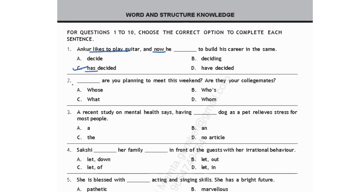The second question: Dash, are you planning to meet this weekend? Are they your college mates? Here you need a pronoun to complete this sentence. 'Whose' cannot be used as it shows possession. 'Who is' will not fit this blank. 'What' is used to indicate things, but here we are talking about people. So 'whom are you planning to meet this weekend? Are they your college mates?' Option D is correct.